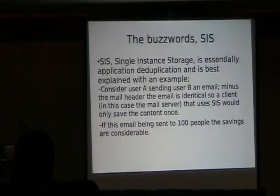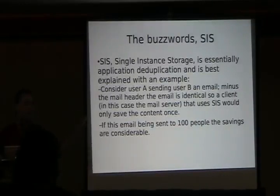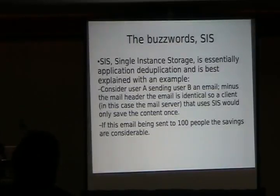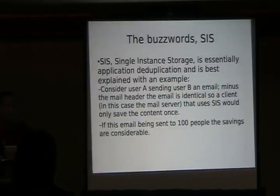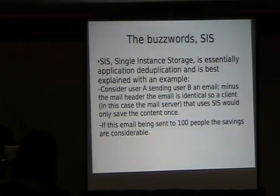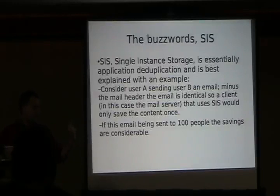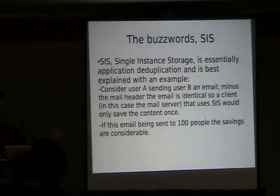Now let's talk a little about SIS. The industry is not really settled on all these definitions, but I picked the most prevalent ones for these buzzwords. SIS is a variation of CAS — easiest to explain with an example. Say you send an email to a thousand people. The email body is obviously the same for all thousand people that receive it. It would be ideal if you only had to save it once, and then save the headers separately. You save a single piece of data only once, never beyond that. Obviously, doing the CAS and SIS method requires application support, because the application needs to understand the protocol.